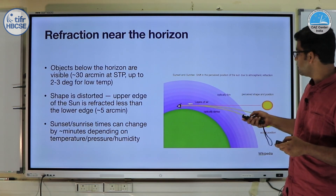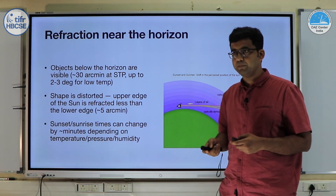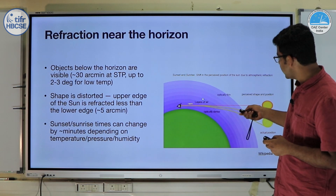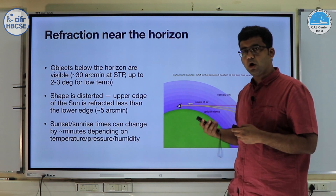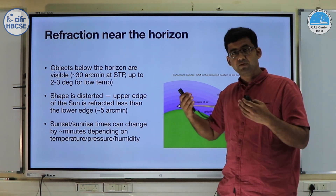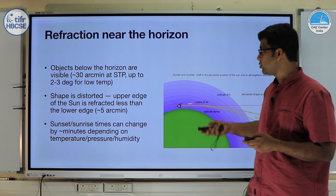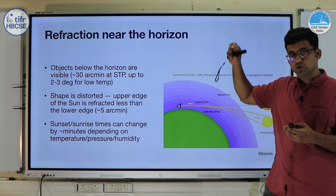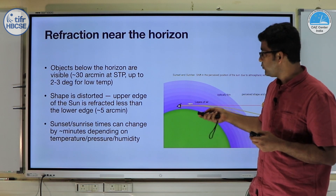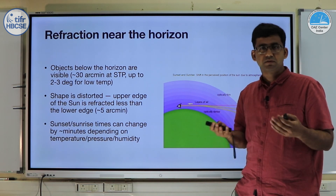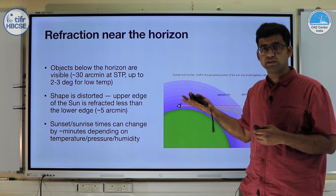Closer to the horizon, refraction is extremely complicated — the plane-parallel approximation no longer works, and because light passes through many layers of air, there can be a lot of bending. In fact, objects that are even below the horizon can appear to be above it. At standard temperature this effect can be as large as 30 arc minutes, so the entire sun's disk can be below the horizon but appear above it. At extremely low temperatures, such as in Antarctica, effects as large as 3 to 4 degrees have been observed.